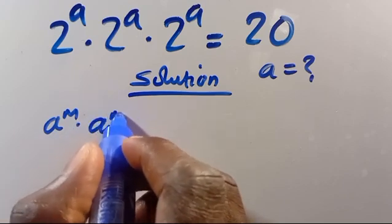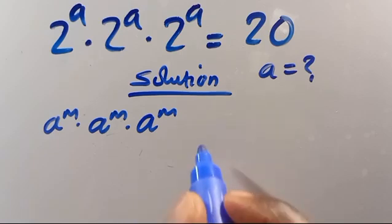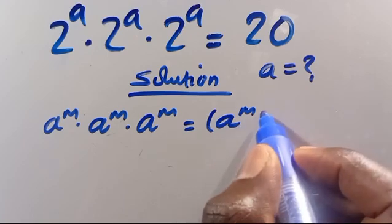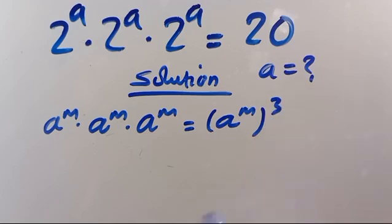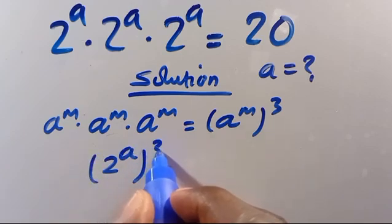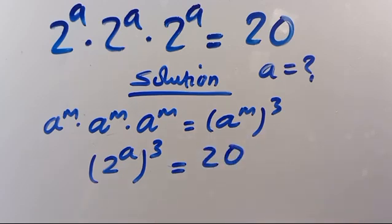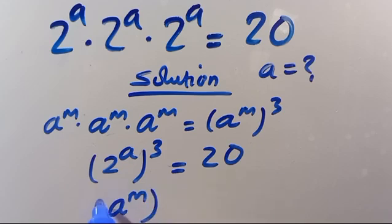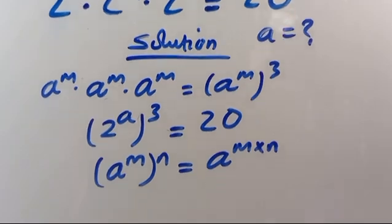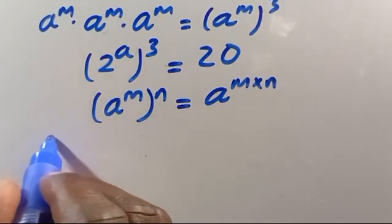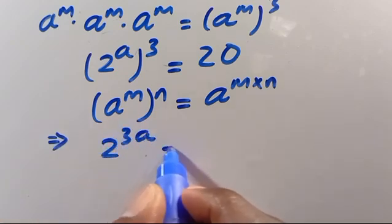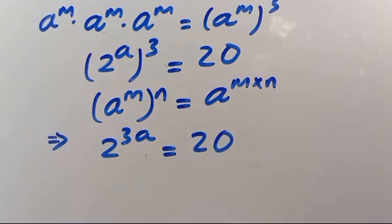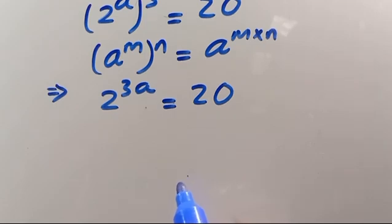From here, when we have A to the power of M times A to the power of M times A to the power of M, this equals A to the power of M, in parentheses, to the power of 3. So we can have this as 2 to the power of A, in parentheses, to the power of 3 equals 20. Then from here, when we have A to the power of M to the power of N, this equals A to the power of M times N. So from here we have this to be 2 to the power of 3A equals 20.